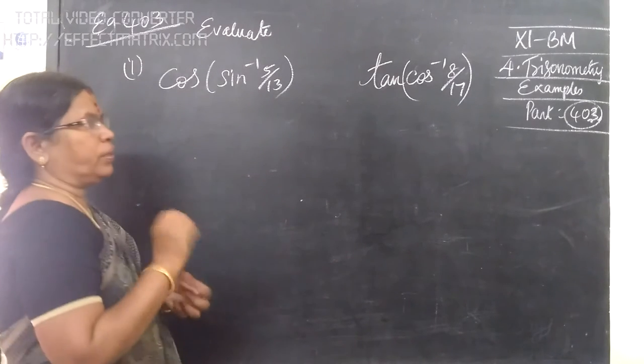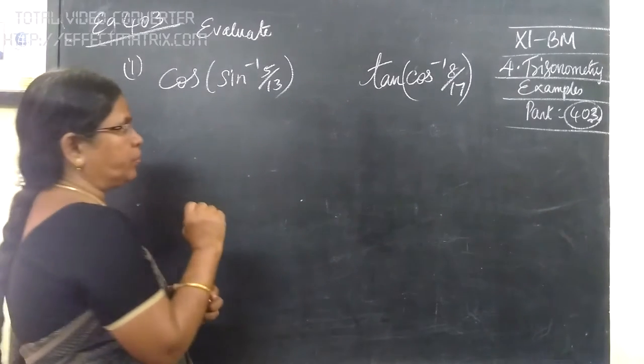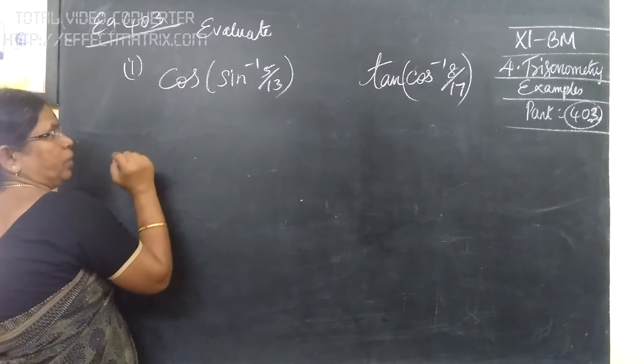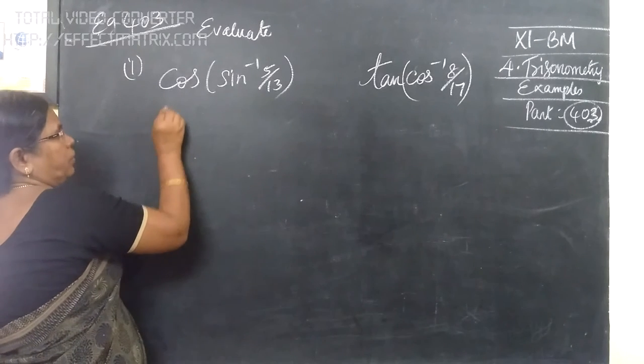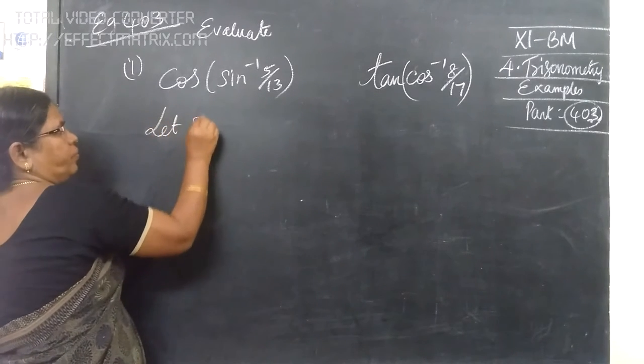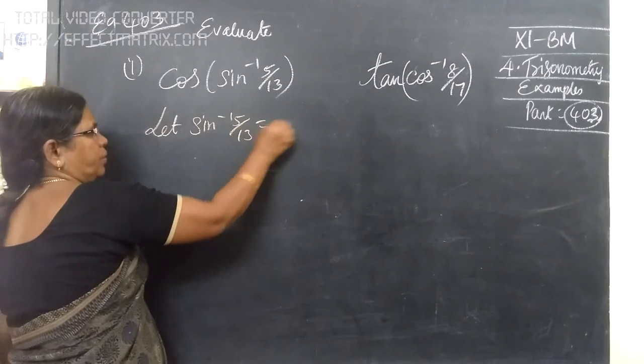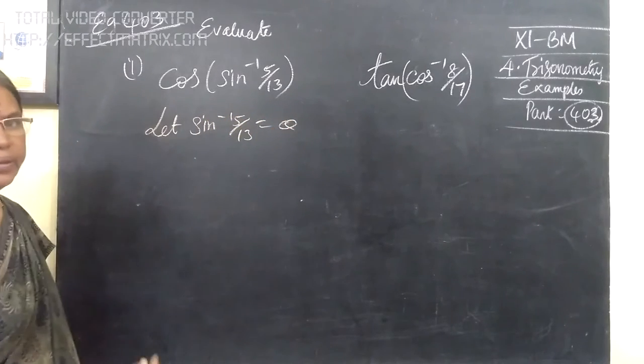Actually, the example is cos(sin⁻¹(5/13)). Of course, we need to find the proper theta. Now, let's begin. Yes, related. Sine inverse 5 by 13, let's call this theta. Yes, it is theta.